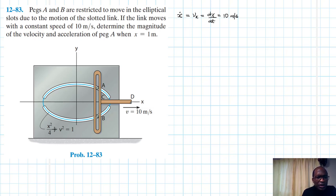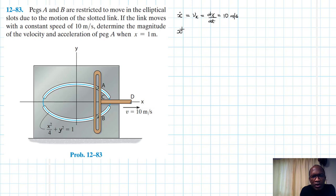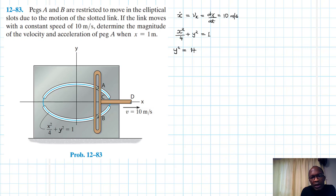We've been given the equation that governs the path of this particular elliptical slot — and here this is supposed to be Y, not V. So let's write down the equation: x² divided by 4 plus y² equals 1. Let's make y² the subject of the formula, so this becomes y² equal to 1 minus x² divided by 4.